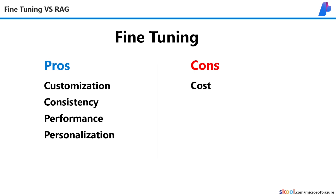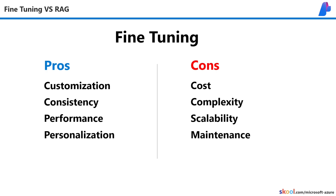The downsides are that the time and computational cost can be expensive. The fine-tuning process can be both complex, and you need enough data that has both variety and narrowed focus to guide your model to perform the way you require. It's not very scalable because it can't translate to other tasks well when it's specialized for a narrow focus. And to maintain a fine-tuned model can require a lot of retraining, which can be a hassle.